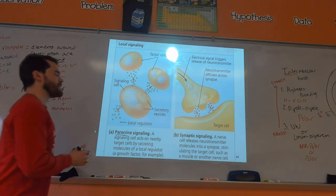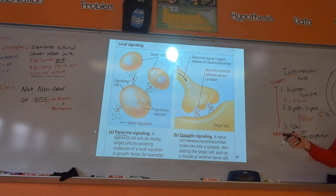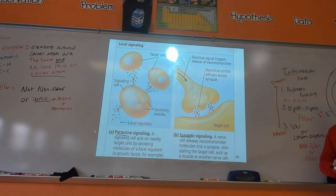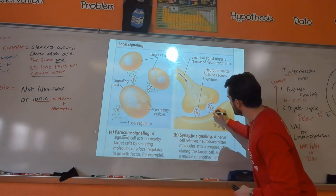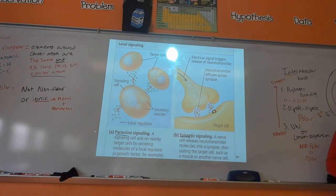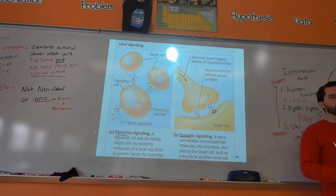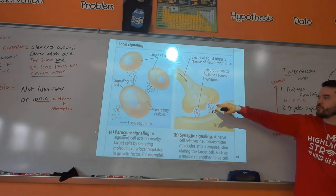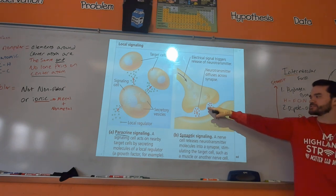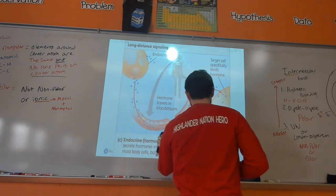The second kind of local signaling is synaptic signaling, which is only for nerve cells. The end of one neuron is the axon; the dendrite is the receiving end of the second neuron. A neurotransmitter diffuses across the synapse and binds to protein receptors on the membrane. The target cell could also be a muscle cell — that's called a neuromuscular junction. Acetylcholine is the main neurotransmitter used in muscle signaling, telling the muscle cell to contract.